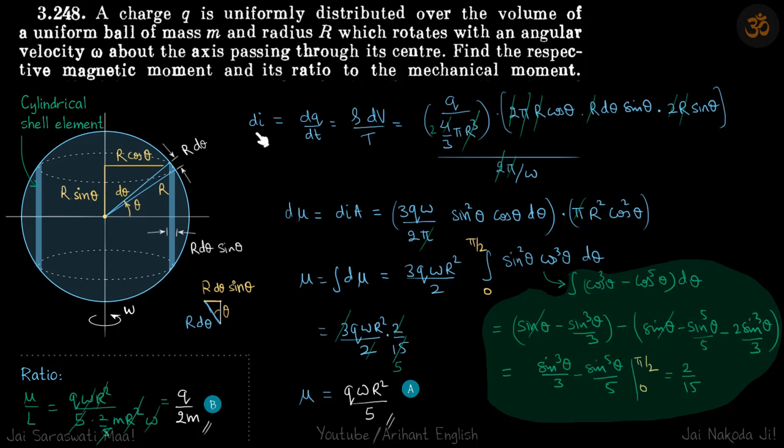So small current di. So see we are calculating magnetic moments. We need di into area. So area we can clearly see is pi into r cos theta whole square. So we need to calculate the small current di now, which is going through the shell, the cylindrical shell. So di is dq by dt. So charge on this shell, cylindrical shell is rho times its volume and time period is 2 pi by omega.